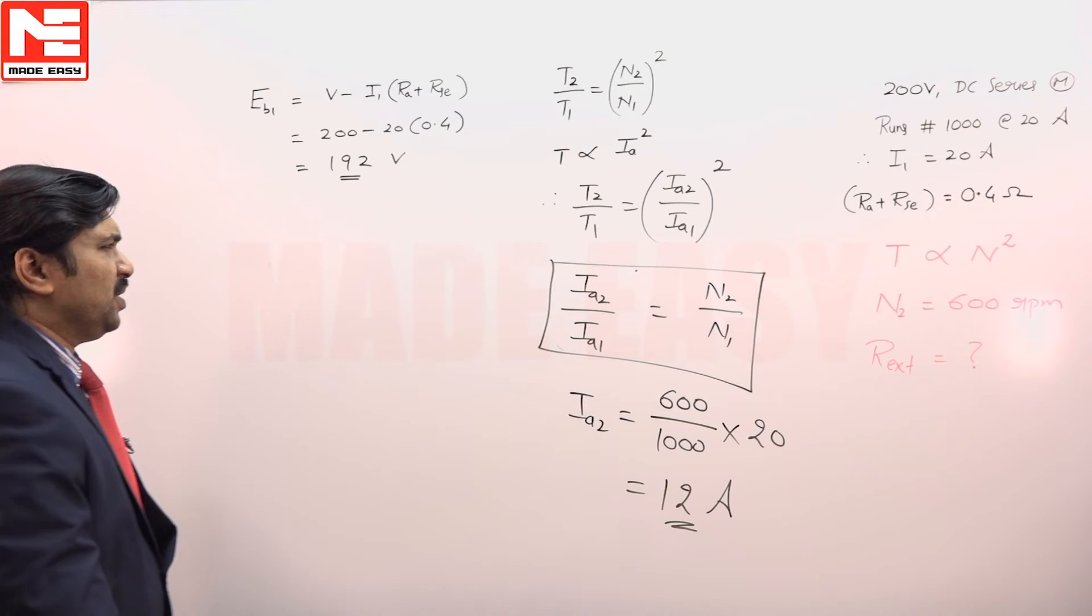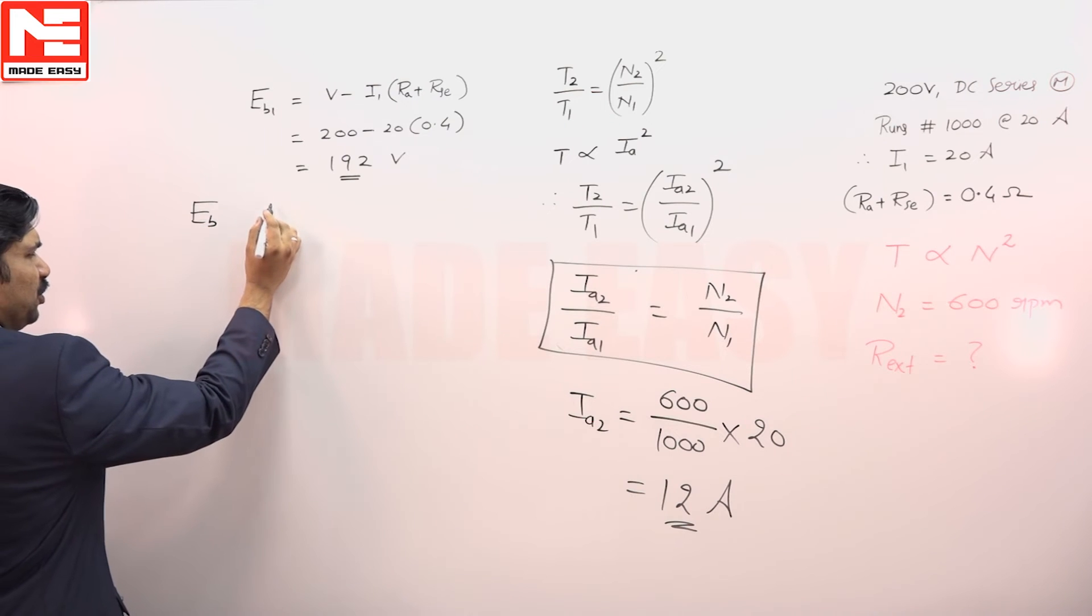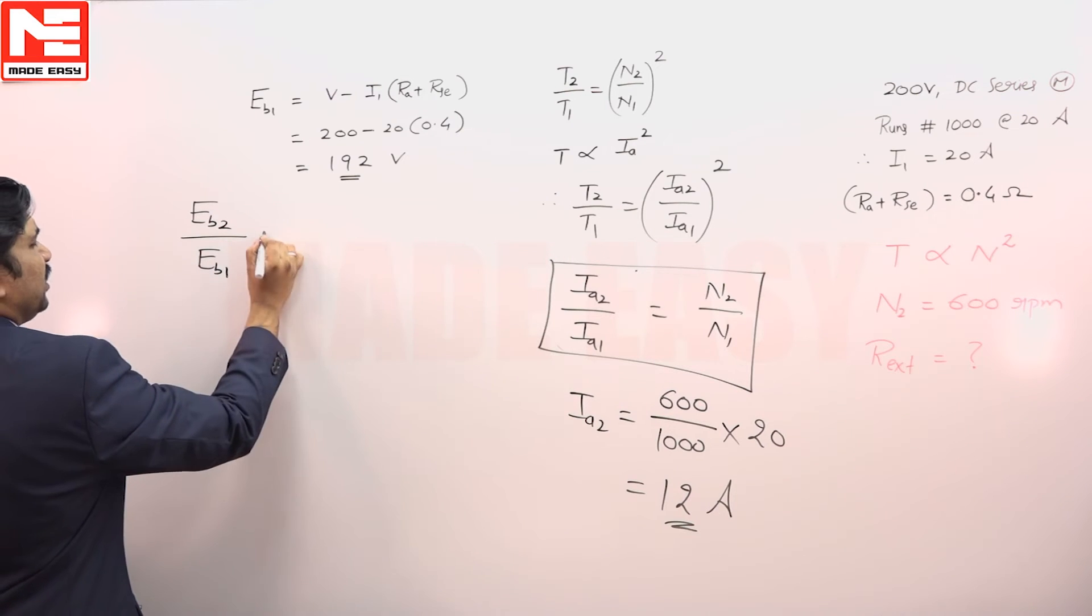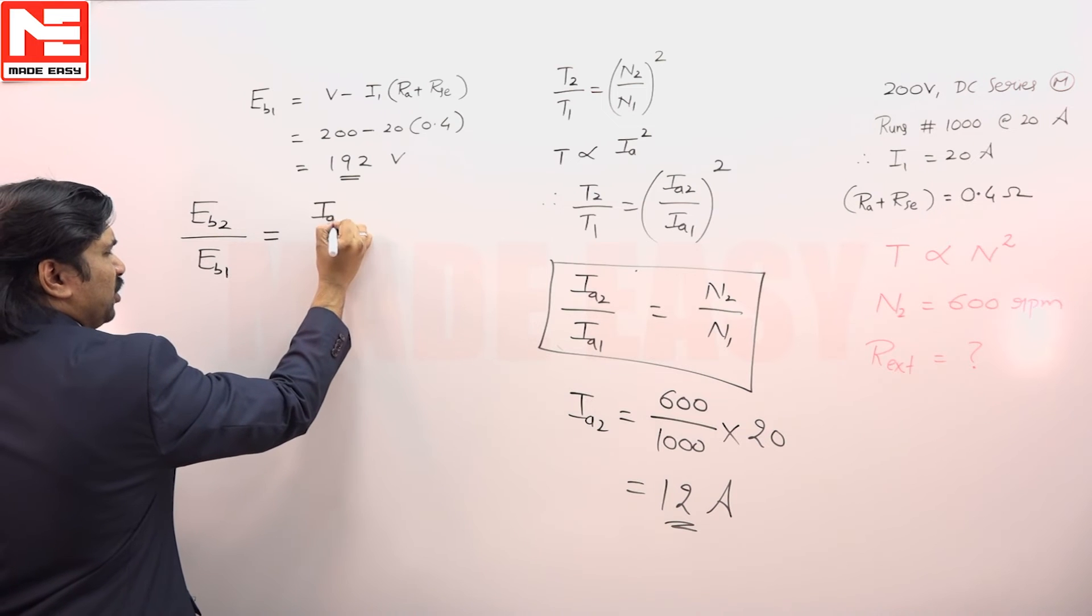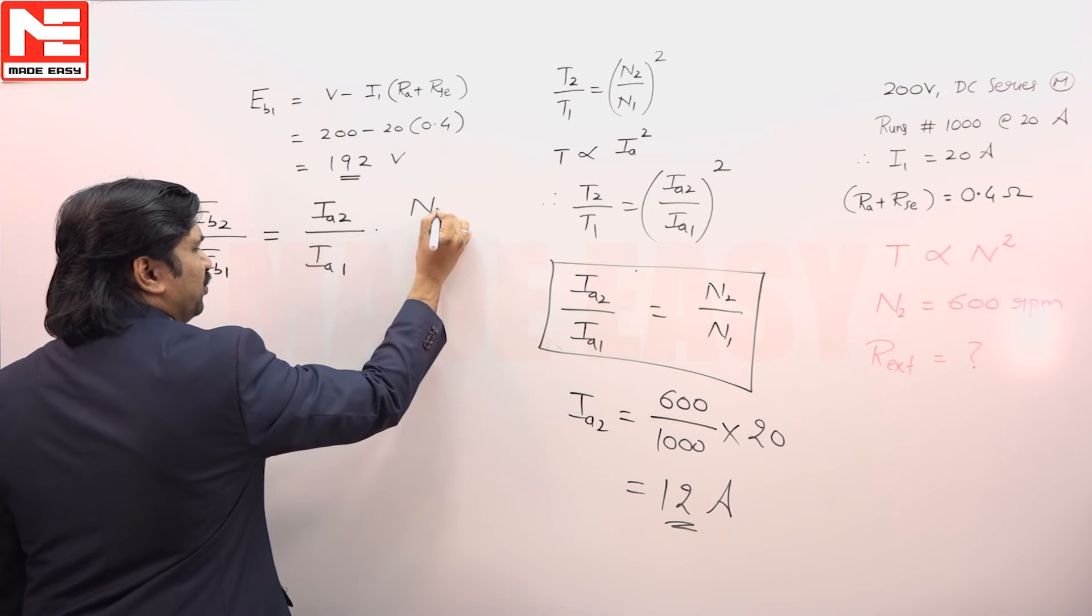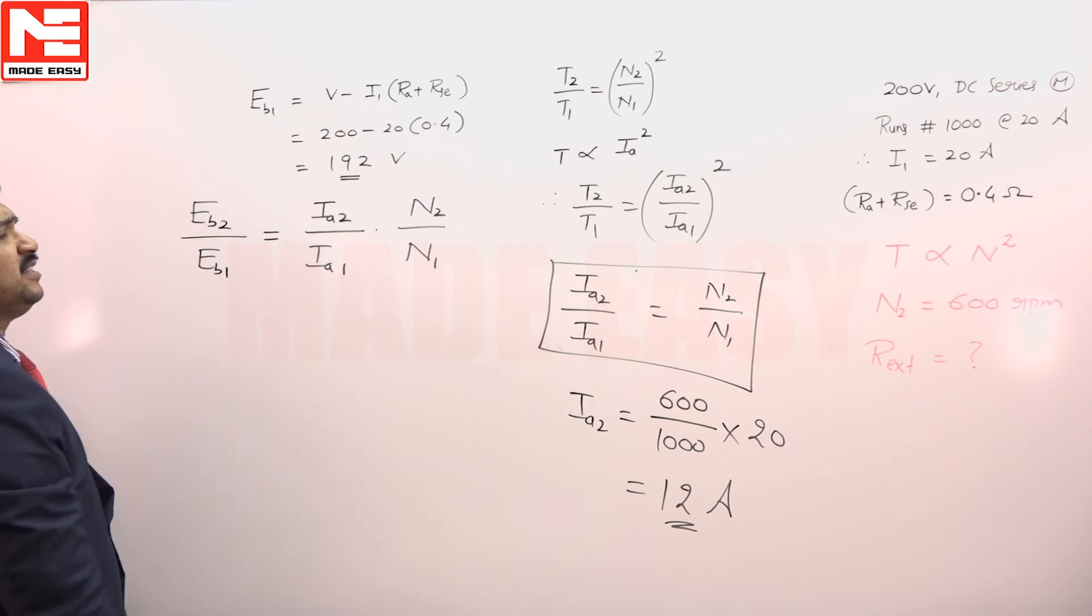Now we know relationship Eb proportional to phi N. Eb2 by Eb1 is equal to phi 2 by phi 1 into N2 by N1. In place of phi 2 by phi 1 we can put Ia2 by Ia1 because flux proportional to Ia in series motor.